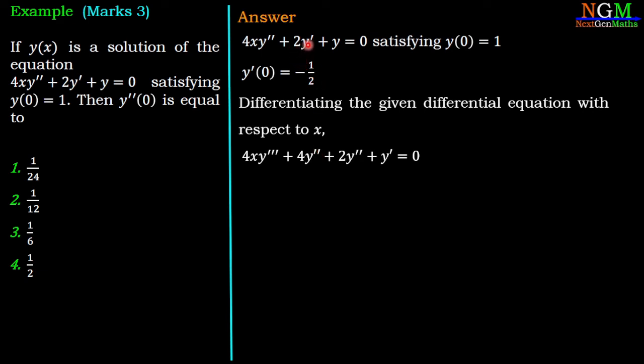Plus 2y', its derivative is 2y''. Plus derivative of y is y', equal to 0. If we simplify this differential equation, we have 4x·y''' + 6y'' + y' = 0.